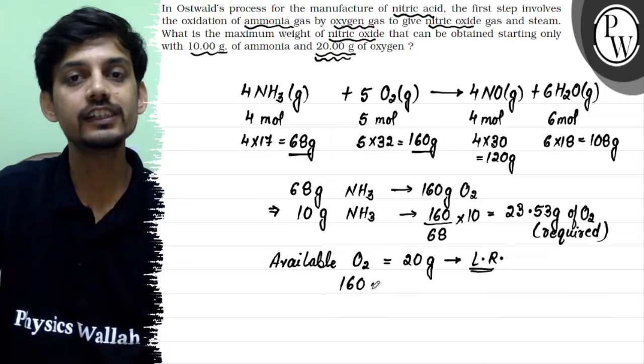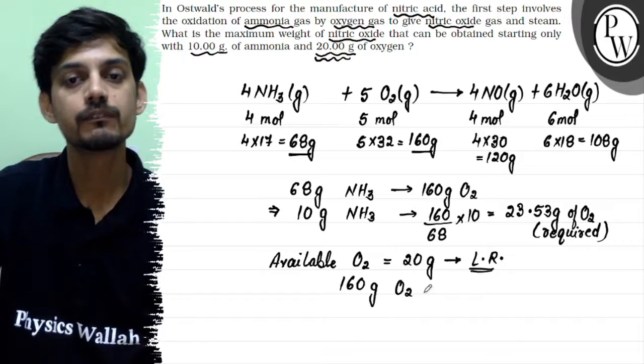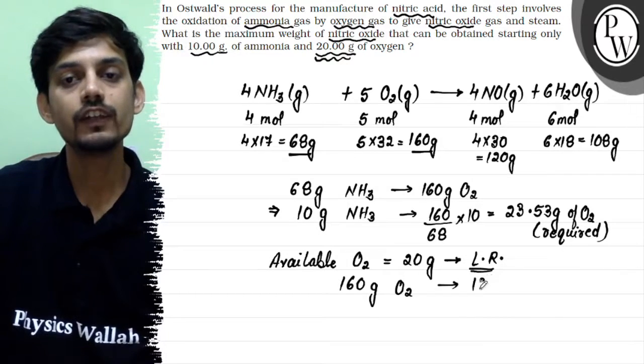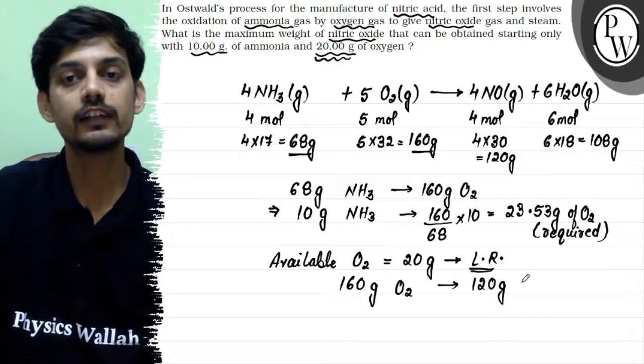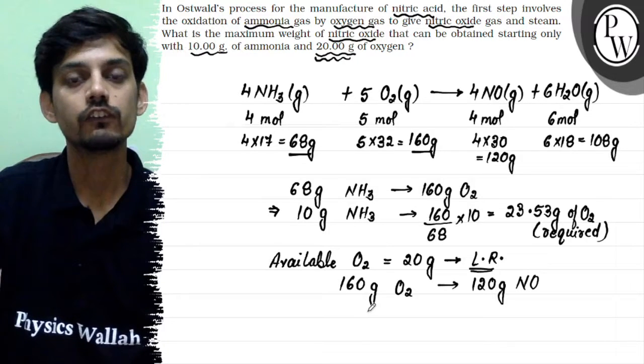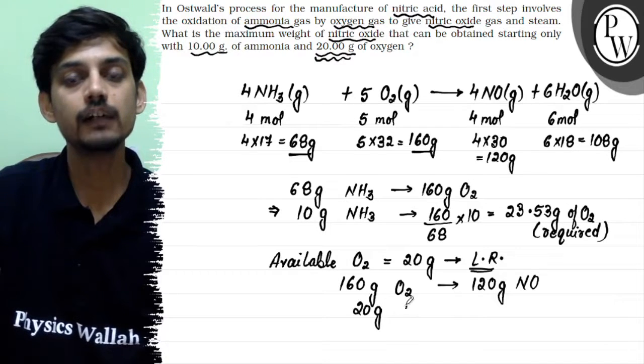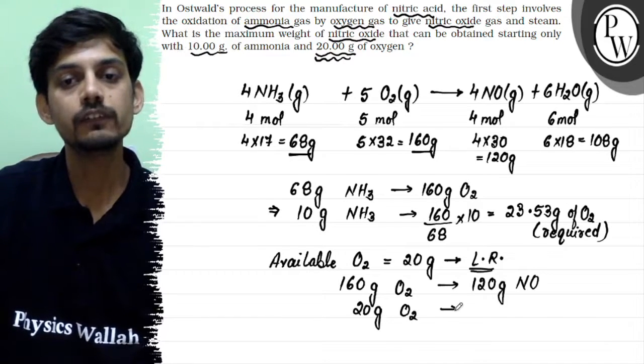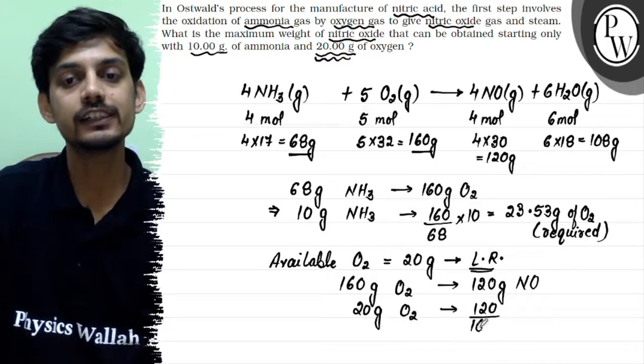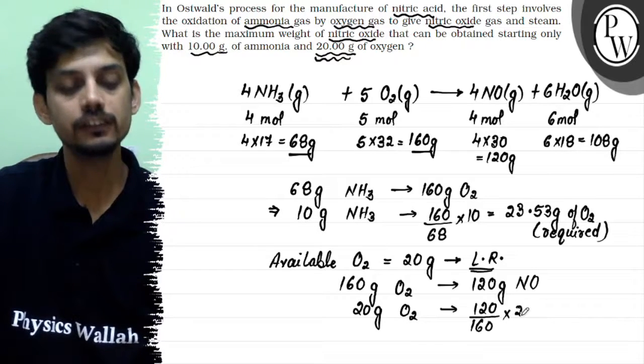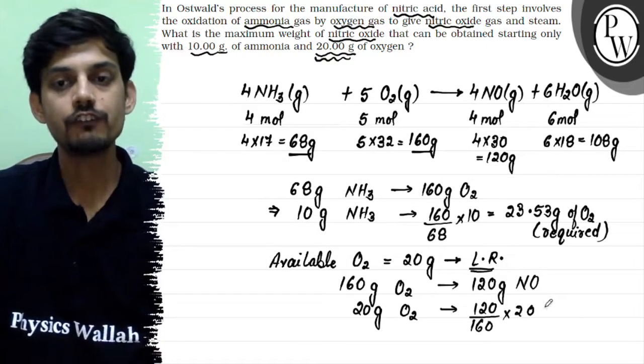We can see from here that 160 grams of oxygen will produce 120 grams of nitric oxide. So again using the unitary method, we can say that 20 grams of oxygen will produce 120 upon 160 into 20, and that will be 15 grams of nitric oxide.